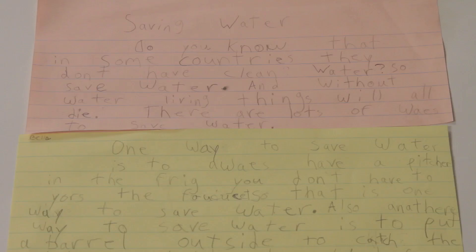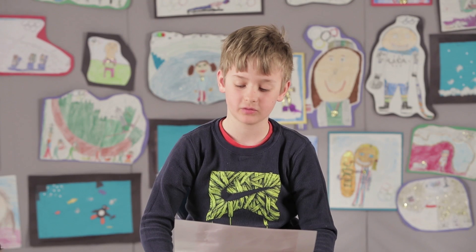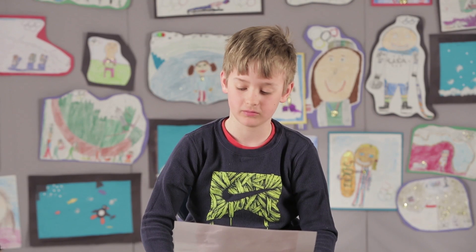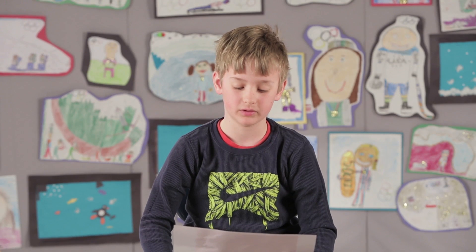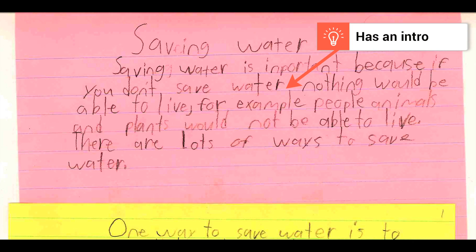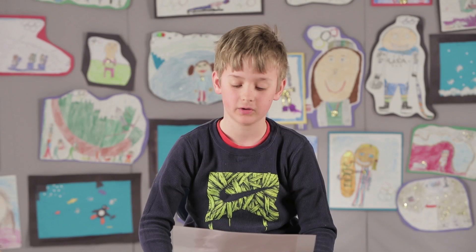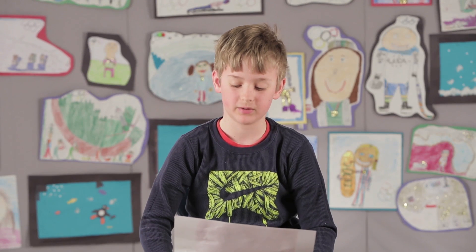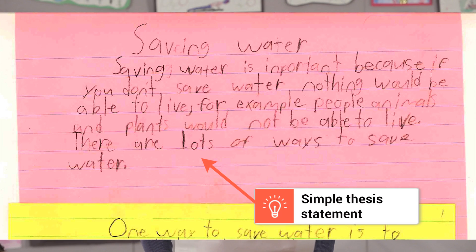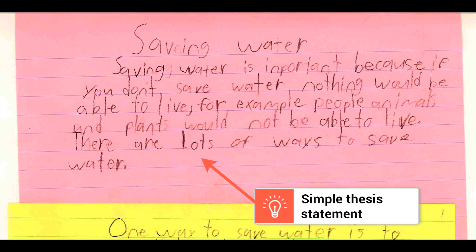Take this example of an essay on how to save water. 'Saving water is important because if you don't save water, nothing would be able to live.' A third grade essay starts with a simple introduction that tells why the topic matters — for example, people, animals, and plants would not be able to live — and has a simple thesis statement that tells what the essay is about: 'There are lots of ways to save water.'